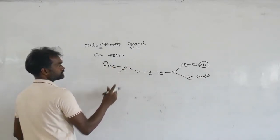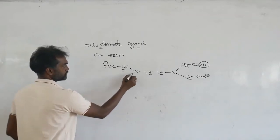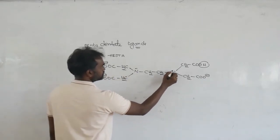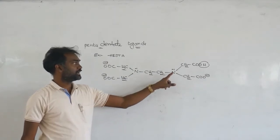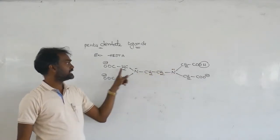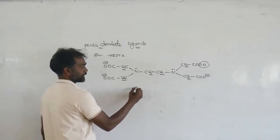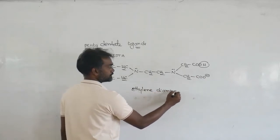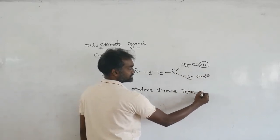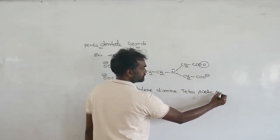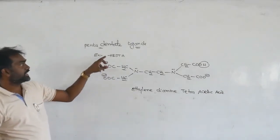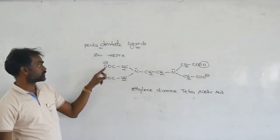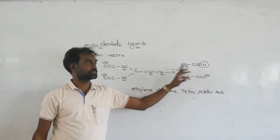The structure of HEDTA involves CH2COO-, CH2COO-, CH2COO-, making it similar to tetra-acetic acid in part. When EDTA is treated with H+, one negative charge is neutralized, so the number of donors becomes 1, 2, 3, 4, 5 — five donors total.